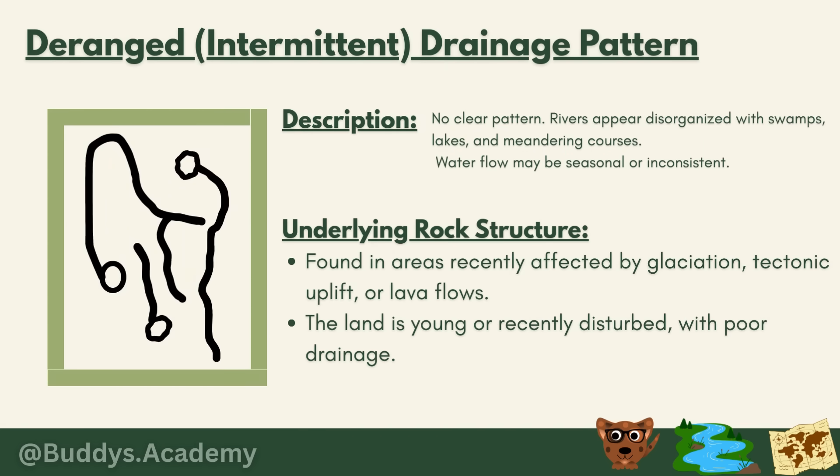The fifth is the deranged or intermittent drainage pattern — there is no clear pattern. Rivers appear disorganized with swamps, lakes and meandering courses, and water flow may be seasonal or inconsistent. It develops from the disruption of a pre-existing drainage pattern, meaning it was previously a different drainage type that got disrupted. This pattern is found in areas recently affected by glaciation, tectonic uplift or lava flows — land that is young or recently disturbed with poor drainage.